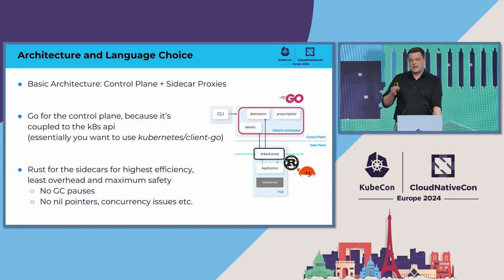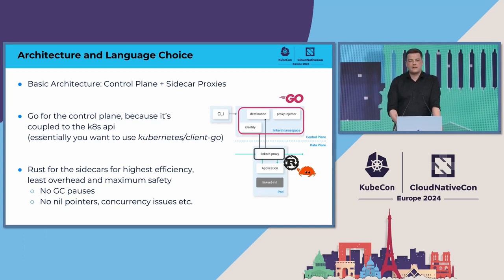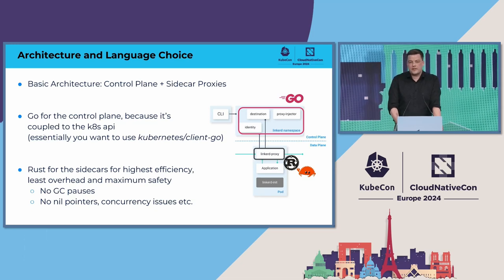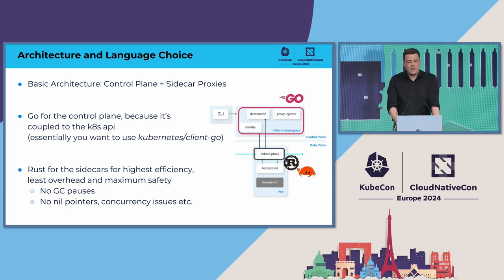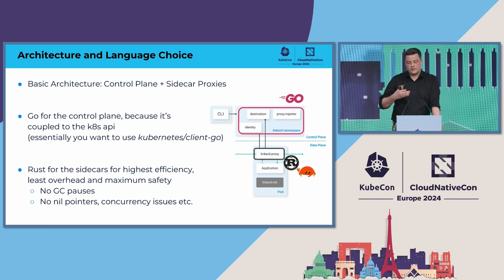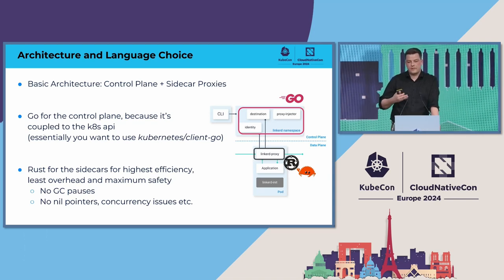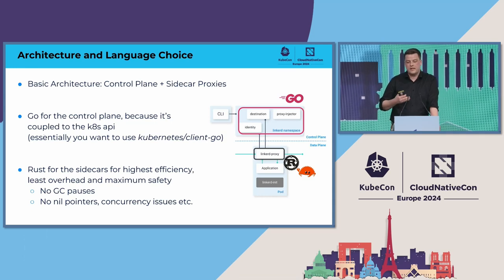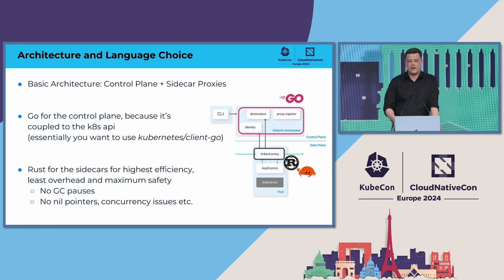The Linkerd team made a bold move a while ago. Early on in the Rust language, they decided to go with Rust for the sidecars. They are all implemented in Rust — that systems programming language that is very low-level but introduces a lot of safety features. You have no garbage collection pauses, no nil pointers, no concurrency issues. The language helps you avoid them.